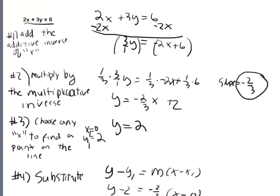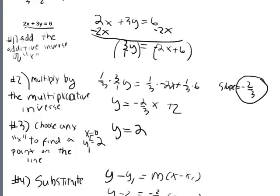When going from standard form to point slope form: first, add the additive inverse of the x term to both sides to isolate the y term. Then multiply by the multiplicative inverse of the coefficient in front of y — so if you have 3, multiply everything by 1/3. This gets you to y equals form, from which you can read off the slope. Then choose any x value to find a point on the line — the easiest is always x equals 0. Finally, substitute the slope and point into the general point slope equation, and you're done.